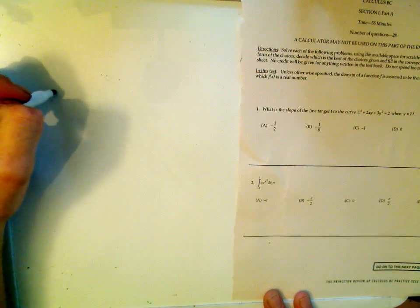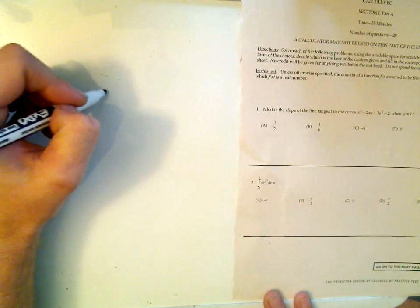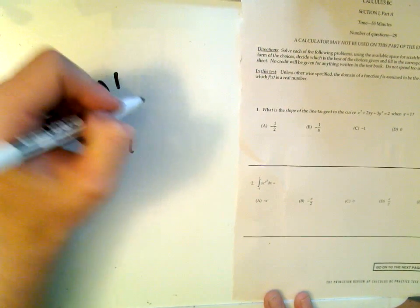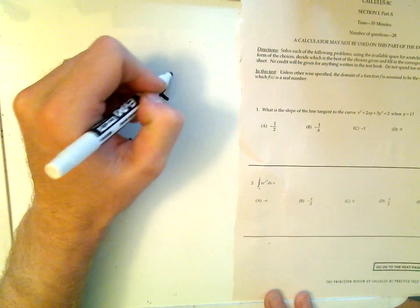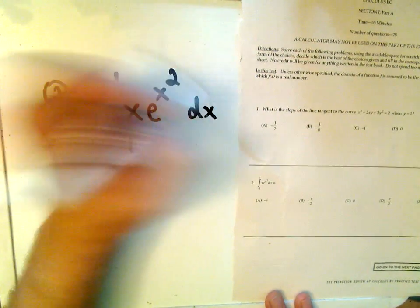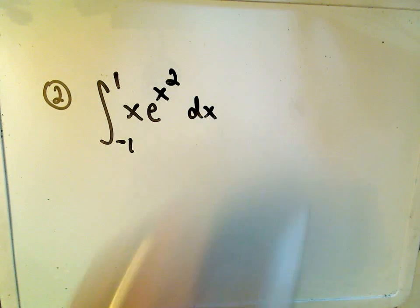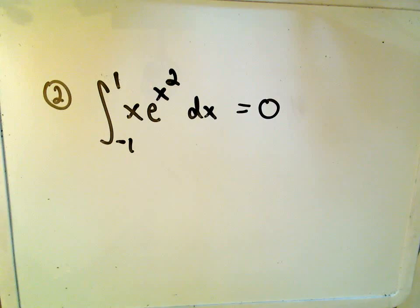The next problem on this practice test is the following. It's an integral, and they want you to integrate from negative 1 to positive 1 of x e to the x squared dx, and I can look at this right off the bat and tell you that that's going to be 0 without much work.